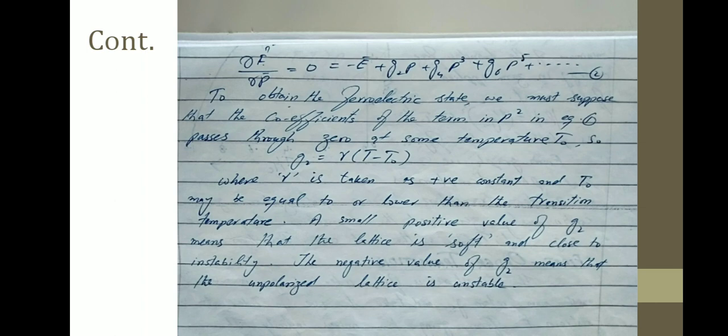A small positive value of G₂ means that the lattice is soft and close to instability. A negative value of G₂ means that the unpolarized lattice is unstable.